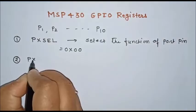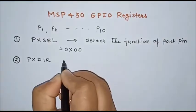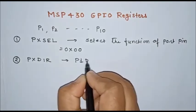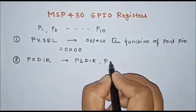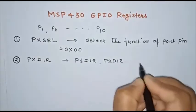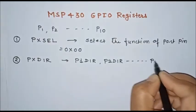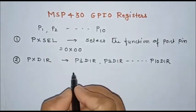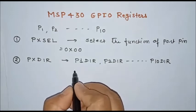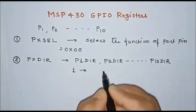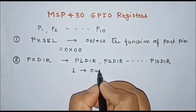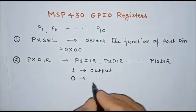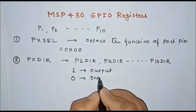The next register is the direction register, PxDIR. For each port, one register is available — for example, P1DIR for port 1, P2DIR for port 2, and likewise up to P10DIR for port 10. If you set a particular bit to logic 1, that port pin is configured as an output. When you set a bit to 0, that port pin is configured as an input.